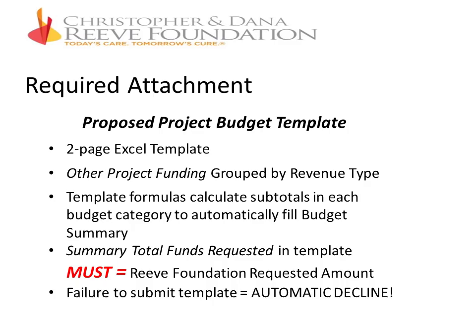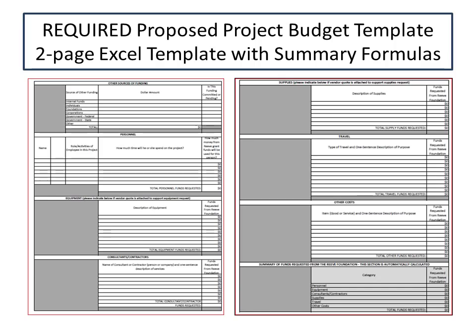The application process does allow for reapplication if you apply early enough and made a mistake. The budget template is a two-page form — the first section covers other sources of funding grouped by revenue type, with columns for internal funds, individuals, foundations, corporations, federal government, state government, and other. You can indicate whether funding is committed or pending.